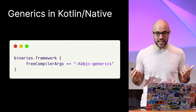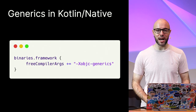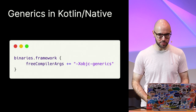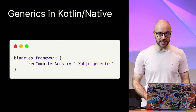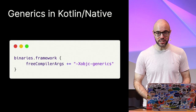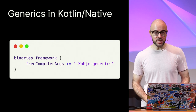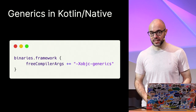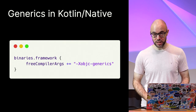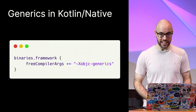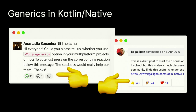One of my favorite stories is about how support for generics appeared in our Objective-C interop. Last April, Kevin Galligan sent in a huge pull request which added support for generics in Kotlin Native. We didn't immediately include it in the release at the time, though we left the option of enabling it with a flag. As it turns out, the community loved the feature, so in 1.4 M1 we officially released it. When I was preparing for this talk, I realized that Kevin is the best person to tell us about his contribution story.